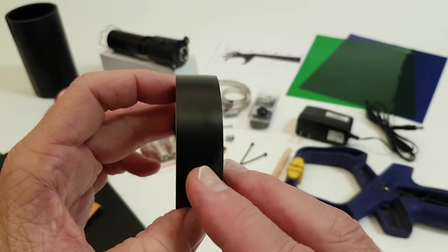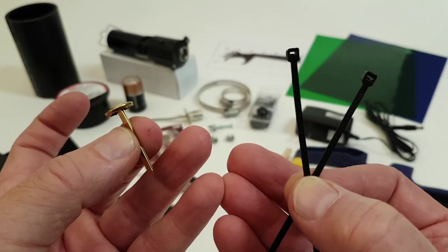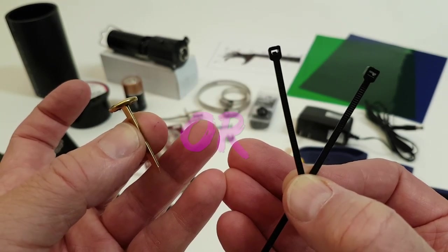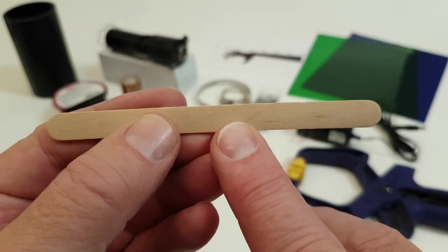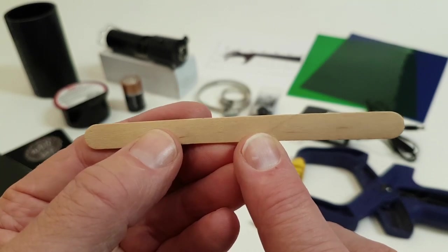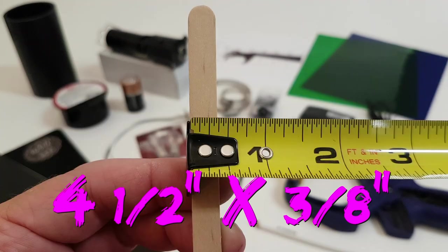Electrical tape. Either one brass paper fastener with legs in the one inch range or two very small zip ties. One small craft or popsicle stick. It should measure around four and one half inches long by around three eighths of an inch wide.